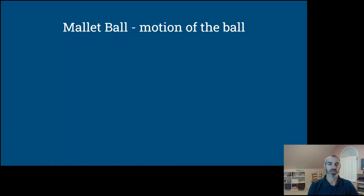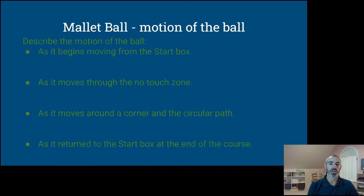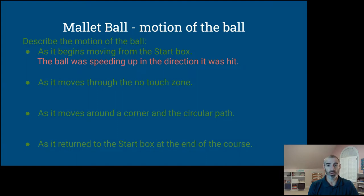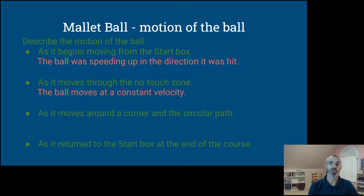Now let's answer some questions. We're going to describe the motion of the ball as it begins to move from the starting box. When we first hit it with the rubber mallet, it wasn't moving, but then the ball was speeding up in the direction it was hit. As it navigated through the no-touch zone, we weren't allowed to touch it, and the ball moved at a relatively constant velocity — if the surface were completely horizontal, it would have moved at a completely constant velocity.